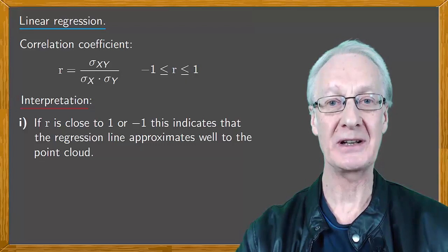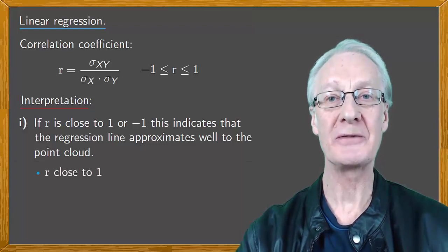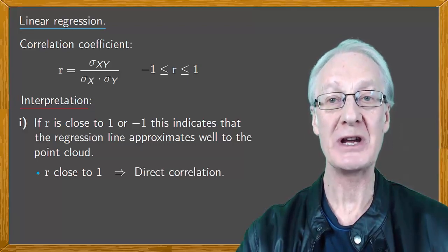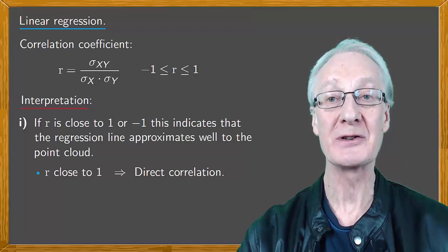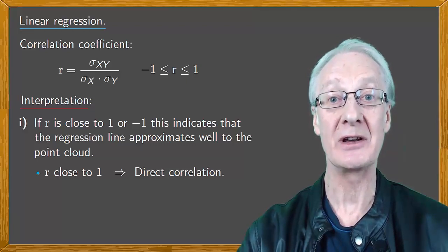More specifically, if the correlation coefficient is close to one, we say that there's a direct correlation, which indicates a tendency that if one variable grows, so does the other. Or if one variable decreases, then the other one does too.